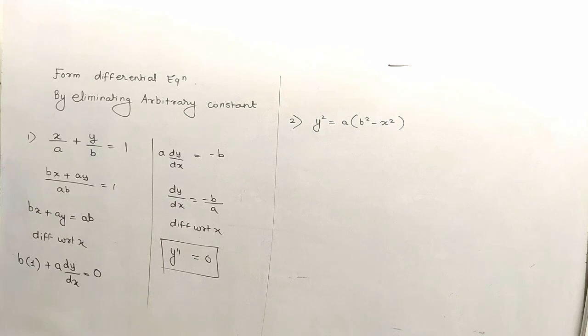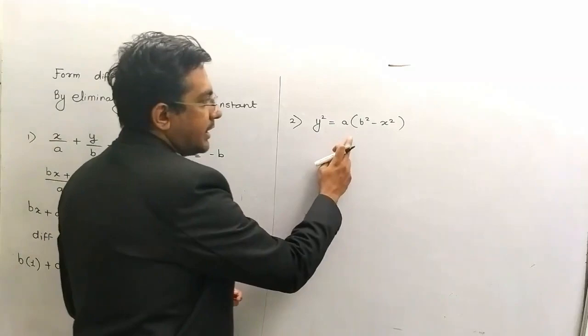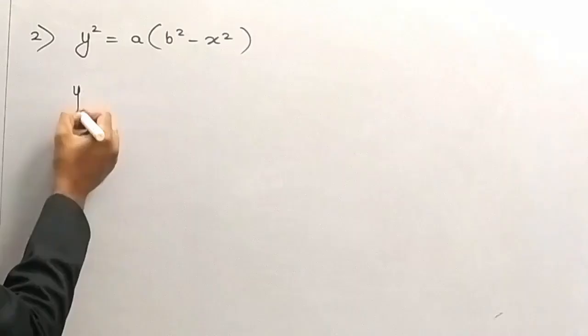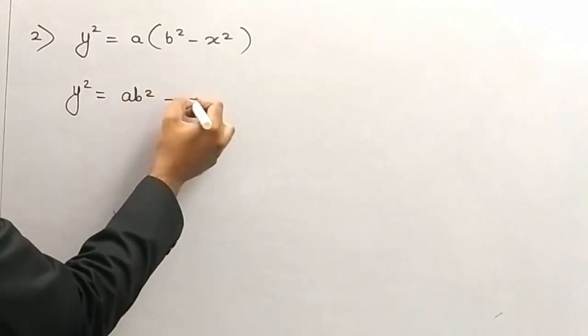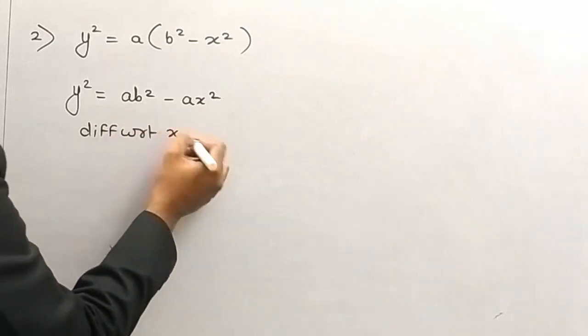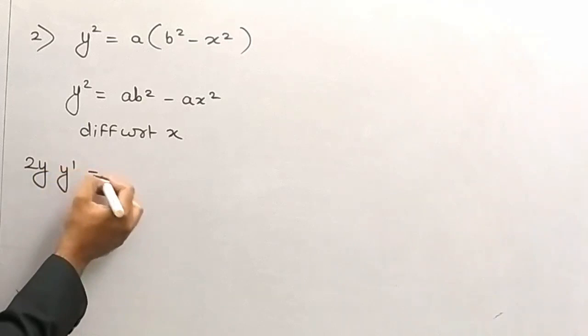The second question hai. Mujhe aisa lagta hai, if you multiply it, it would be easier for you to kill the constant. Now differentiate with respect to x. y² ka derivative 2y — instead of writing dy/dx, I am writing y', because it saves time.